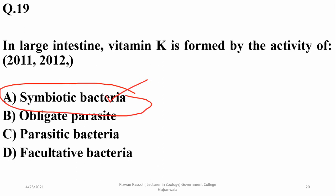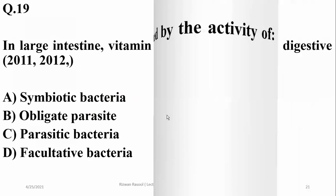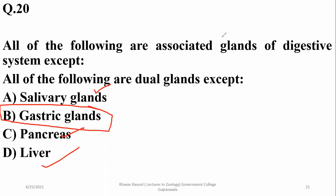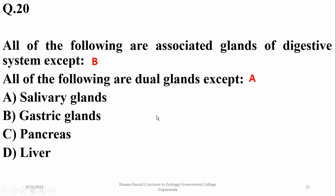E. coli lives symbiotically in the large intestine. They are facultative anaerobes, but here they perform a role as symbionts, so the preferable answer is alpha. All of the following are associated glands of the digestive system except gastric glands — they are not associated glands; they are themselves part of the digestive tract. Salivary glands, pancreas, and liver are considered associated glands, so the right option is beta.